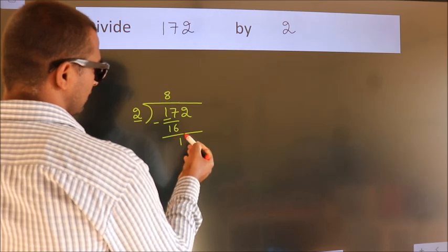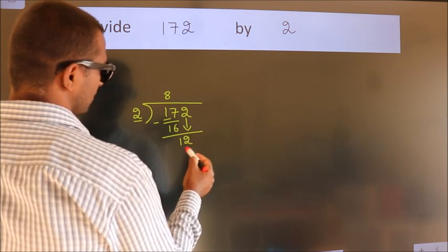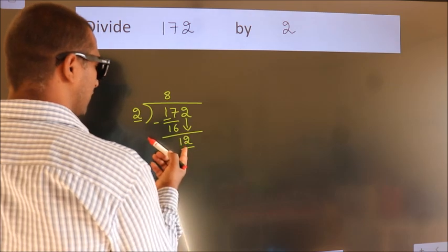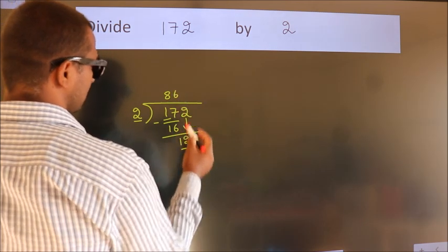After this, bring down the beside number. So 2 down, so 12. When do we get 12? In 2 table, 2 times 6 equals 12.